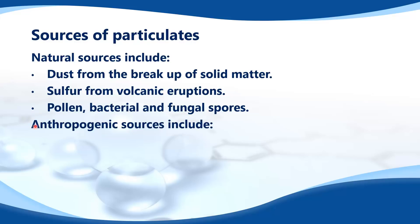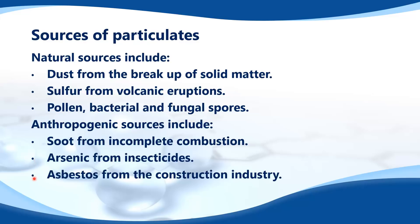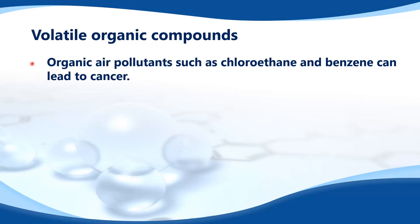Anthropogenic sources of particulates include soot from incomplete combustion, arsenic from insecticides, and asbestos from the construction industry. Volatile organic compounds: organic air pollutants such as chloroethane and benzene can lead to cancer.